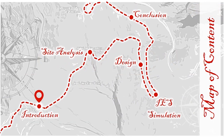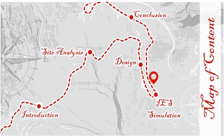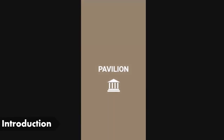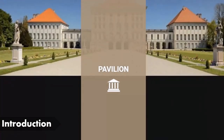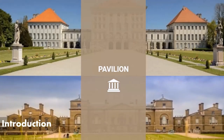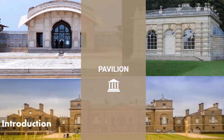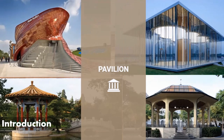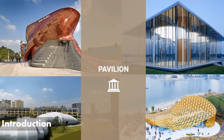In our presentation we will have five main stops: introduction, site analysis, design, IAS simulation, and conclusion. In architecture, a pavilion refers to a subsidiary building that is either positioned separately or as an attachment to a main building. Nowadays it can be found in several shapes for different functions, either as a block or a standalone structure.